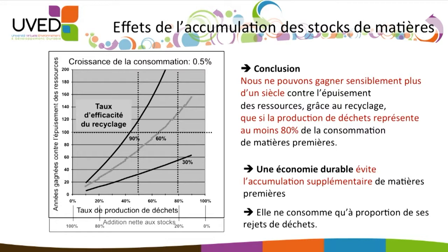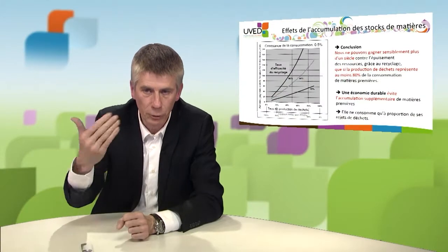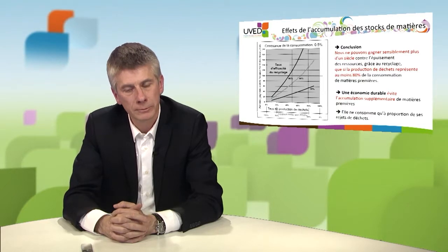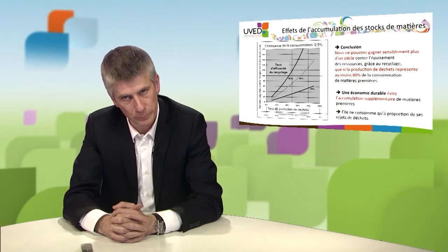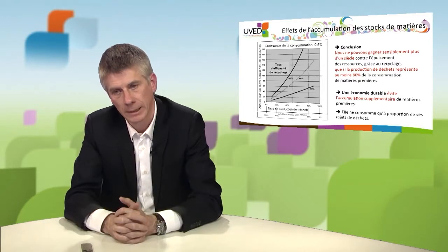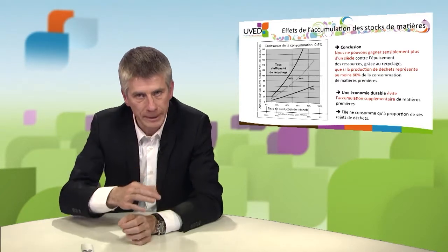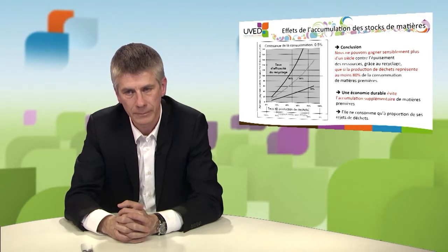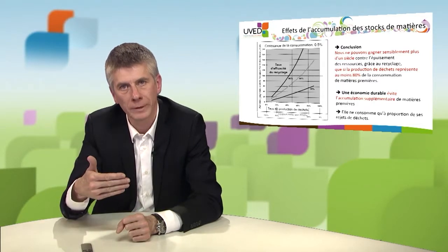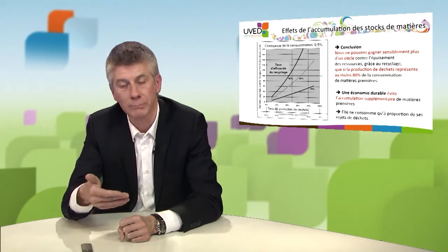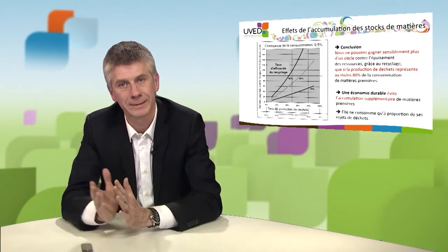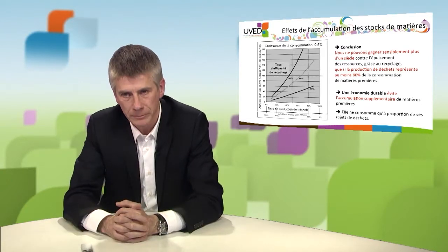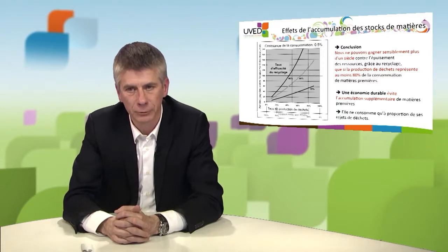When the waste production rate is 100%, the addition to stocks is 0%. This allows us to represent the number of years we save with regards to resource depletion compared to the scenario where we recycle absolutely nothing. Without recycling, we would have an exponential graph. With recycling, the graph is shifted over time — and how many years that shift represents is shown on the x-axis.